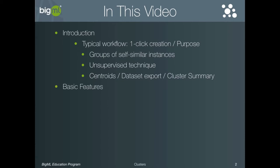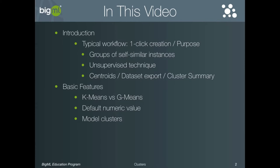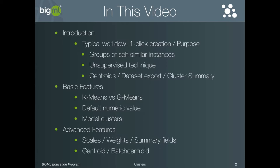In the basic features we will explore the configuration options for creating a cluster, including choosing between the two clustering algorithms — k-means and g-means — and how they differ, the problem with missing numeric values in your data and how to fix it, and the model clusters feature which creates decision trees that help understand the rules that define membership in each of the cluster groups. In the advanced section we will discuss the configuration options for scaling numeric values as well as weights and summary fields, and then we will introduce centroid and batch centroids, which are analogous to predictions and batch predictions for models.